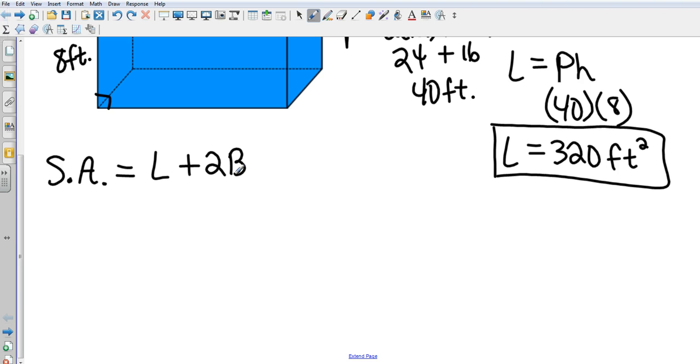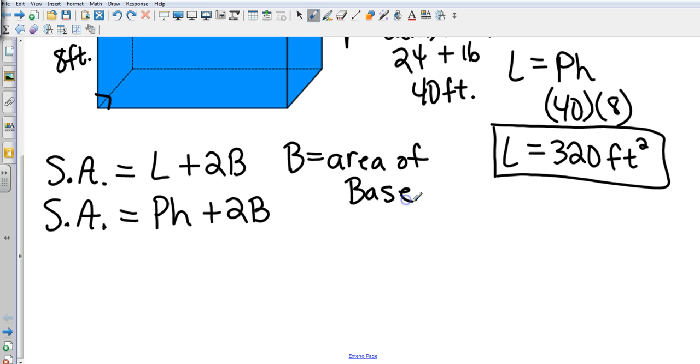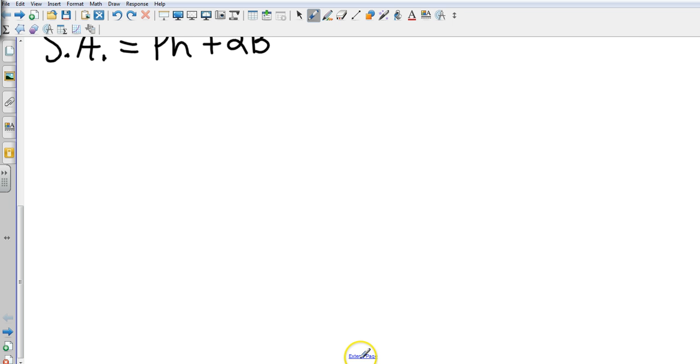where L is the lateral area that we just found, and B is the area of a base, or you could write this, if you don't want to find the lateral area first, as perimeter of the base times the height plus 2 times area of the base. Well, since we've already found the lateral area, I'm going to use the first one.